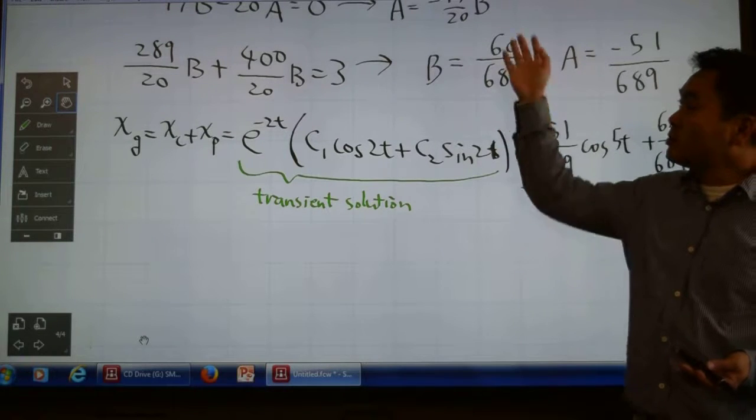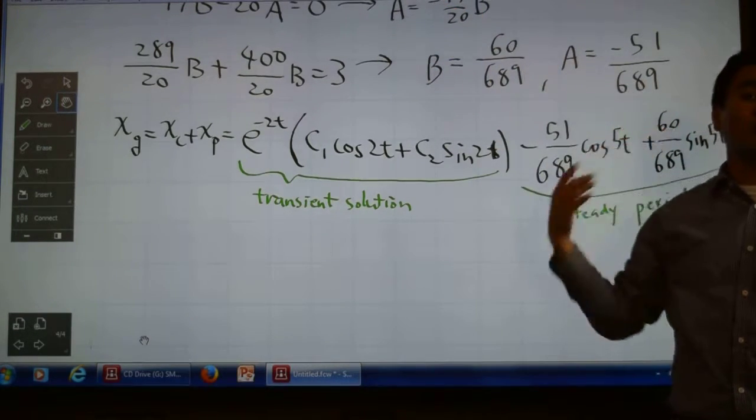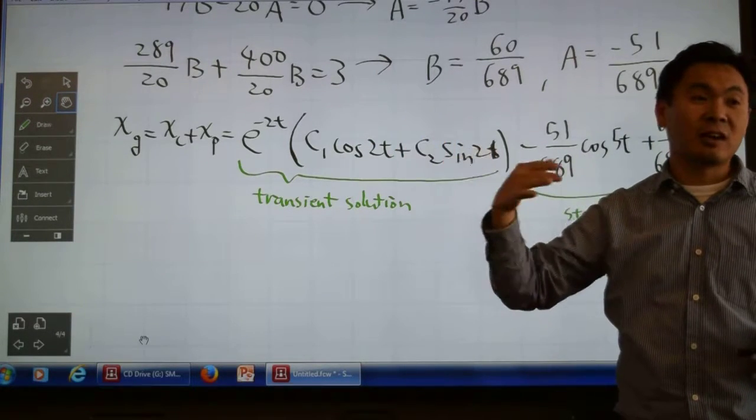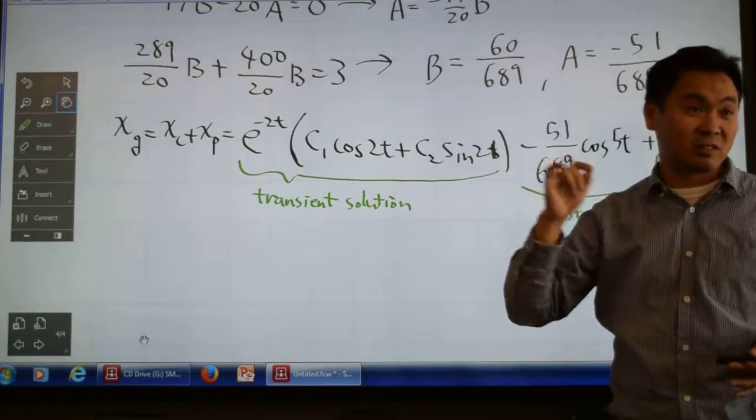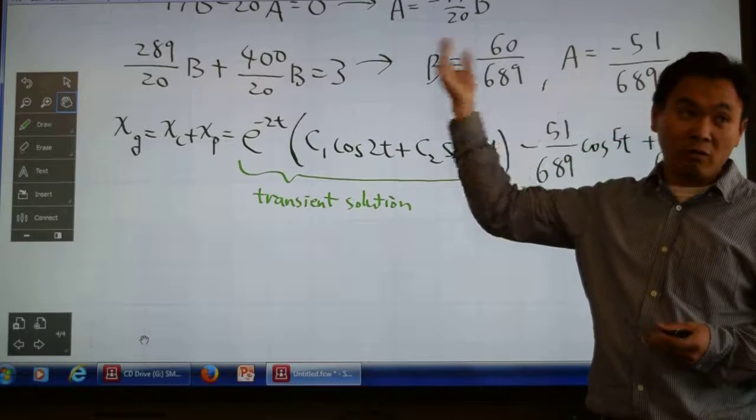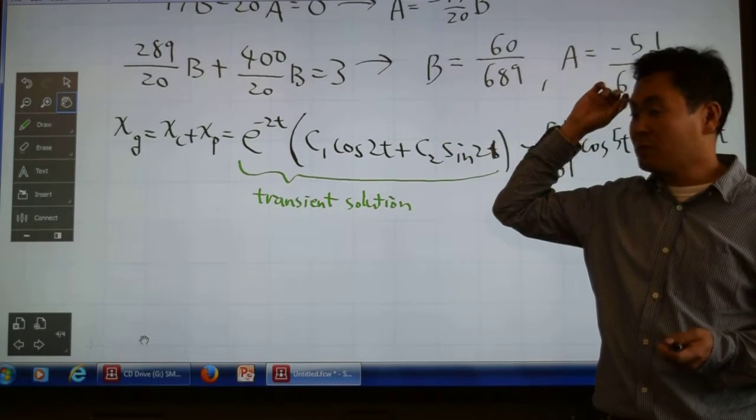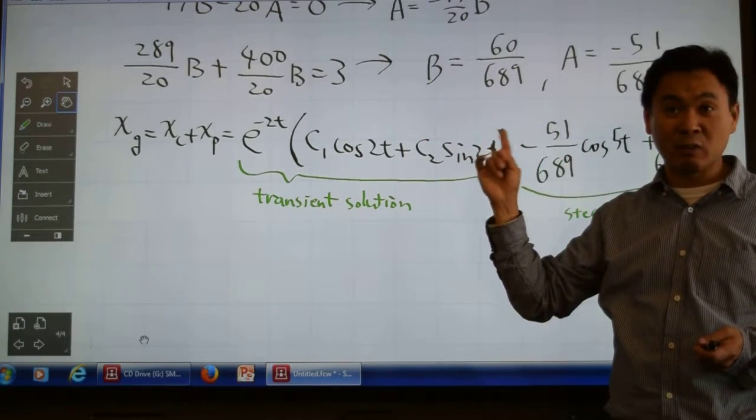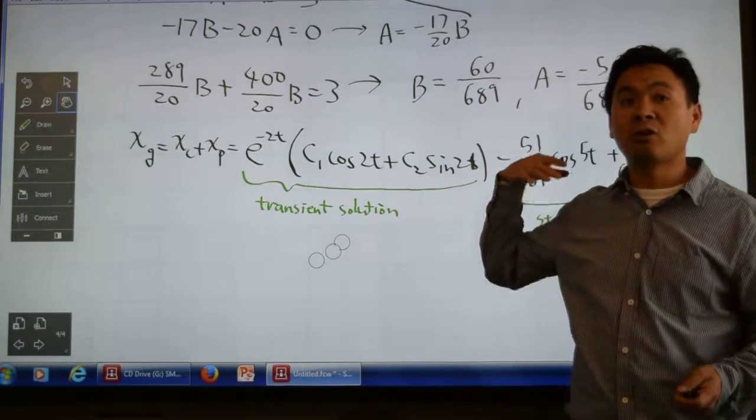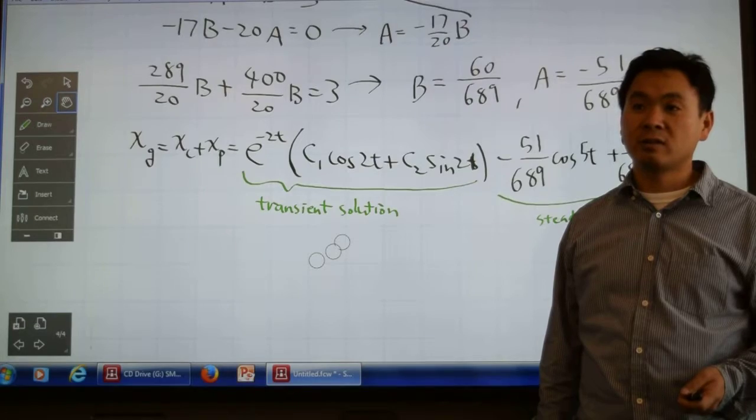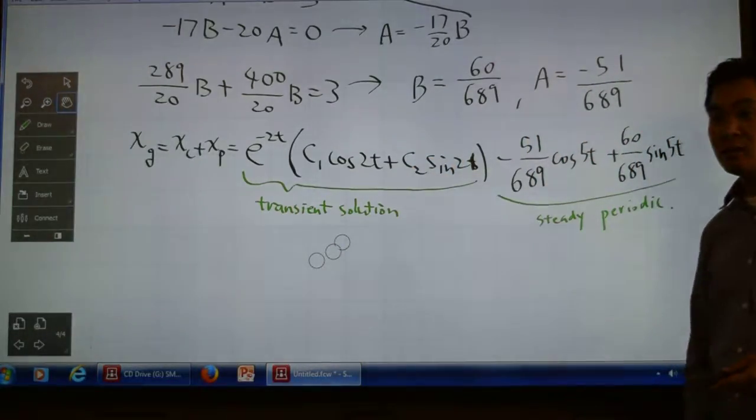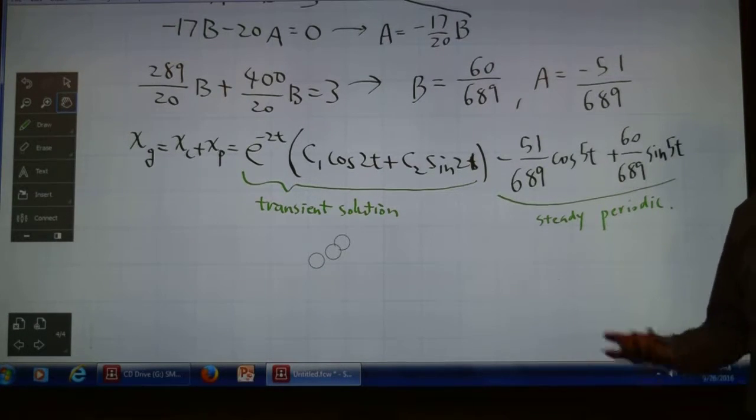What if you solve the characteristic equation and got two real values? That means you get two exponential functions which both decrease to zero. That means it can at most cross the equilibrium once. In that case, you would call the system overdamped. When you get a double root for the characteristic equation, one solution is exponential and the other is multiplied by t. In that case, you call it critically damped.